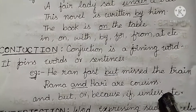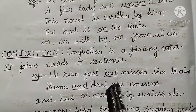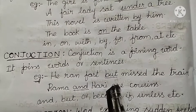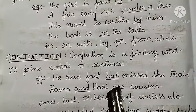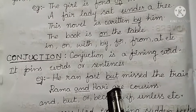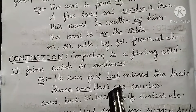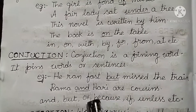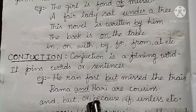Subordinating conjunctions connect clauses that are not equal: because, although, while, since, etc. Other words used as conjunctions include: and, but, or, because, if, unless, since, while. These are all examples of conjunctions — the joining words.